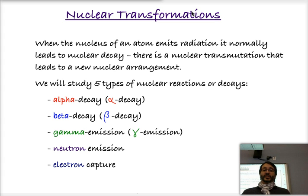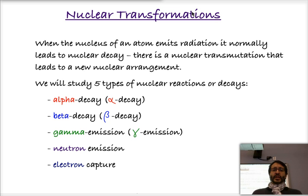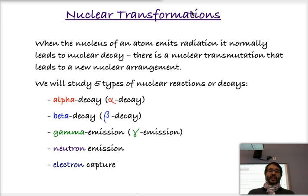We're going to be looking at five different types of nuclear reactions or nuclear decays: alpha, beta, gamma, neutron emission, and electron capture. The first three are emissions or decays. The only type that will not change the nucleus will be the gamma emission, since gamma rays are electromagnetic radiation and therefore they don't carry parts of the nucleus out.